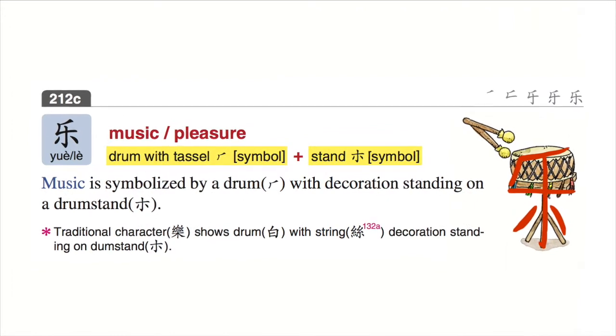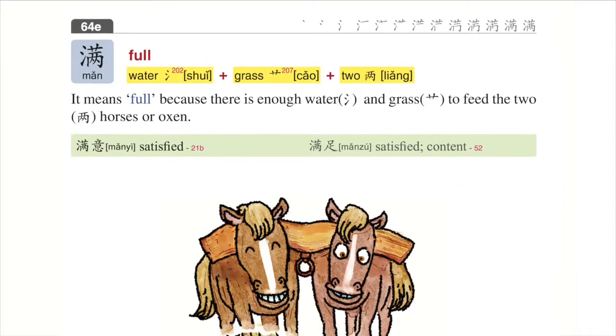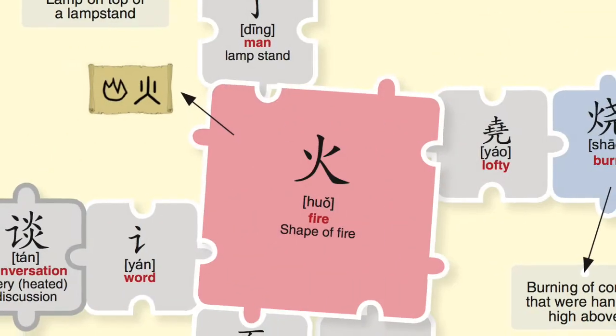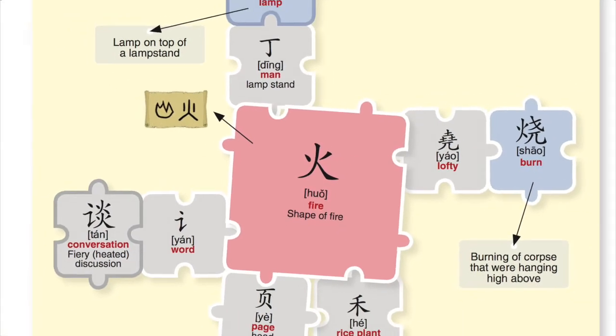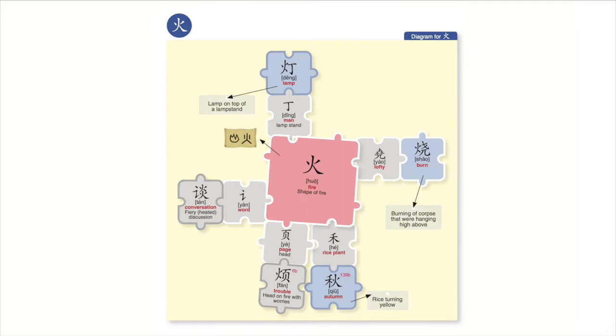Chinese characters are pictographic, which means that the writing symbolizes ideas and objects, rather than the pronunciation. But this doesn't look like noodles, does it? Well, instead of trying to remember 56 meaningless strokes, let's break it down into 9 smaller characters called radicals. Radicals are the basic Chinese characters that combine together to write more complex ones. Let's see how the radicals in biang might relate to noodles.